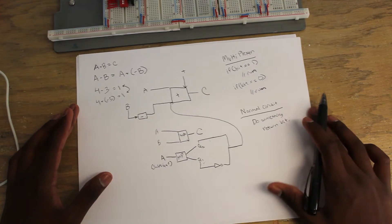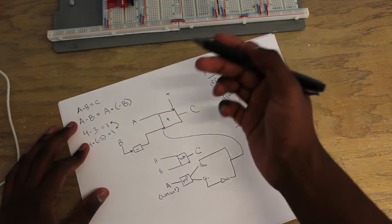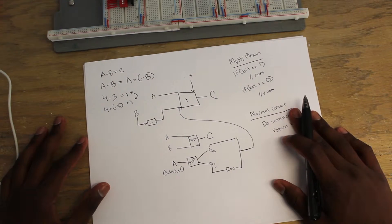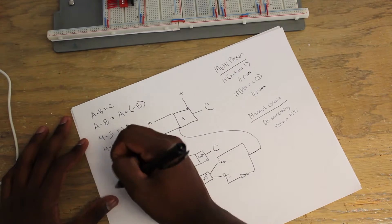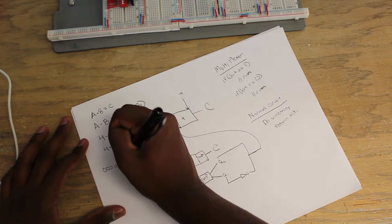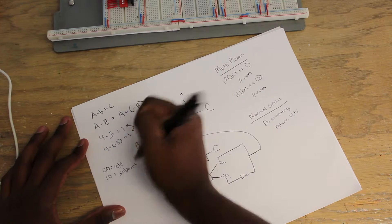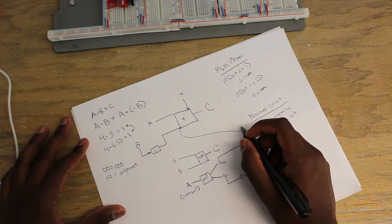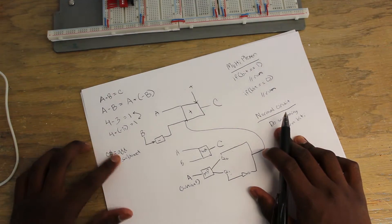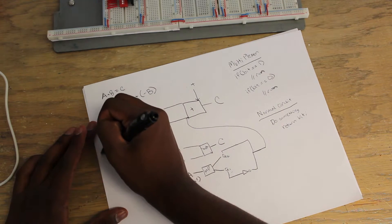The decode block takes the instruction set that you give to the CPU in bits. For our CPU we're probably going to end up doing a 2-bit instruction set, so we can say 0,0 means add and 1,0 means subtract. To simplify, we'll just use a single bit: 0 equals add, 1 equals subtract. I'm going to call this instruction bit D.